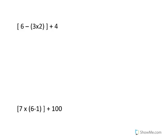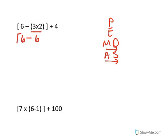The first thing I'm going to do is write 'Please Excuse My Dear Aunt Sally.' Do I have any parentheses? Yes. So the first thing I'm going to do is three times two. I underline three times two. What's three times two? Six. I'm going to copy everything just like it is.